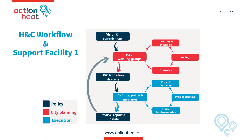In this figure, you see the workflow of heating and cooling planning that has been developed in the first part of the Act on Heat project. You see the different phases. Everything starts with the vision and the commitment that heating and cooling systems have to be changed. A working group should be installed and then a first analysis — the first red cycle is gone through — which means developing inventory and potentials, analyzing inventory potentials, thinking about zoning, different changes that could be followed in different parts of the area, developing scenarios, and in the end coming up with the heating and cooling transition strategy.